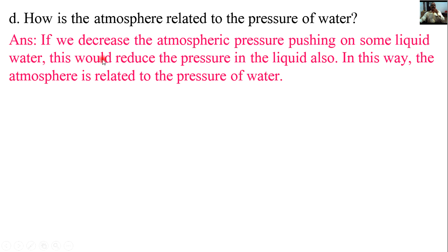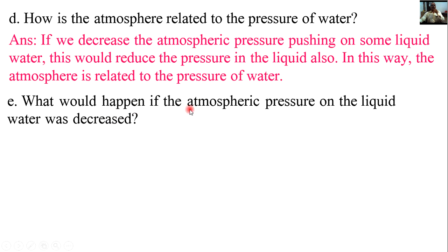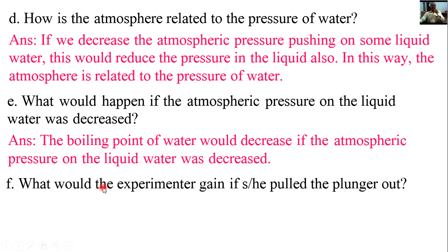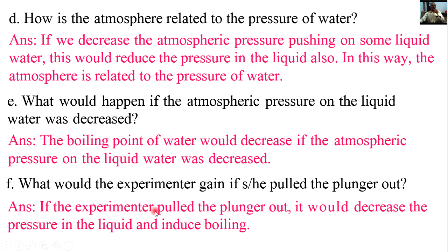How is the atmosphere related to the pressure of water? If we decrease the atmospheric pressure pushing on some liquid water, this would reduce the pressure in the liquid also. In this way, the atmosphere is related to the pressure of water. If the experimenter pulled the plunger out, it would decrease the pressure in the liquid and induce boiling.